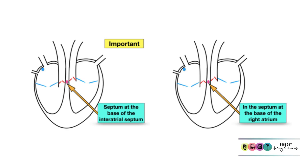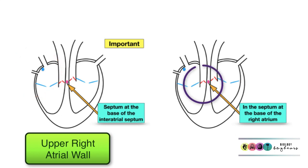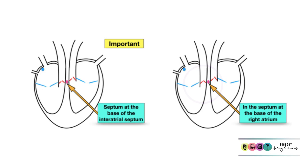A very important piece of information you need to know for your exams is the exact location of the SA node — really easy: the upper right atrial wall. But the AV node is more particular. You must say in the septum at the base of the right atrium, and you must say in the septum.